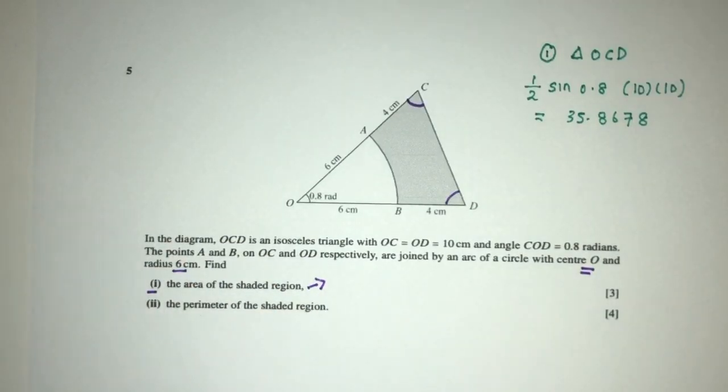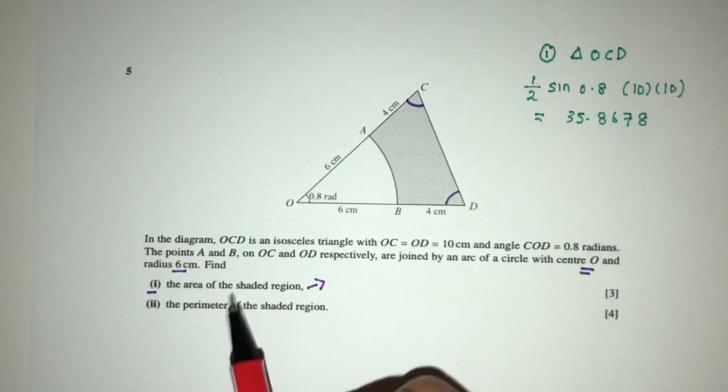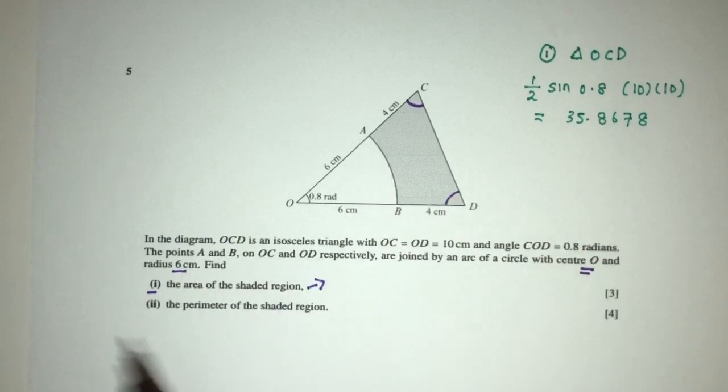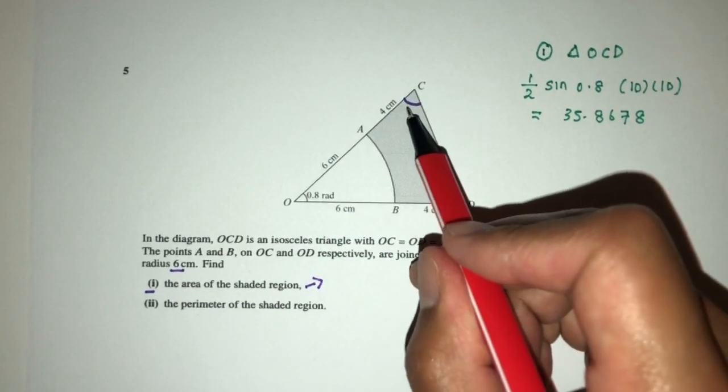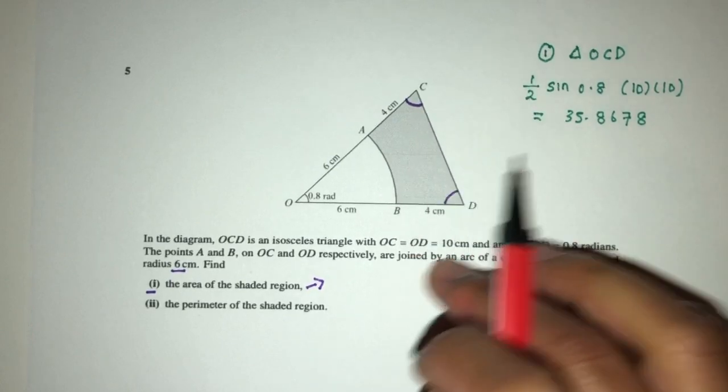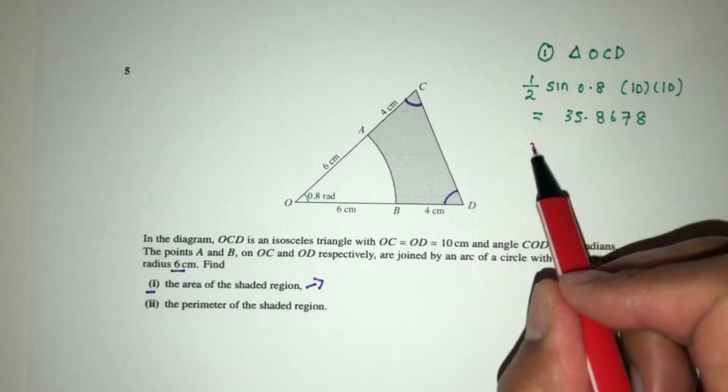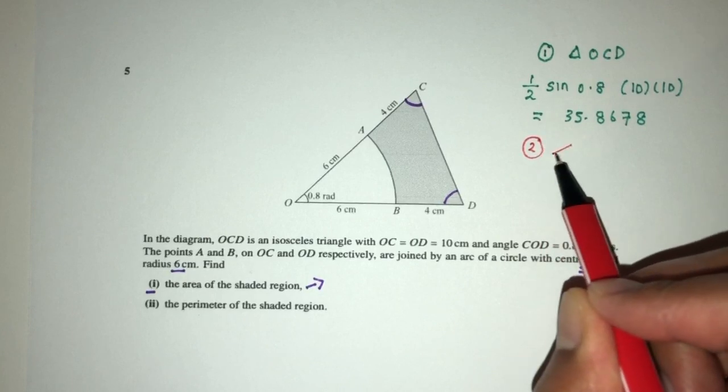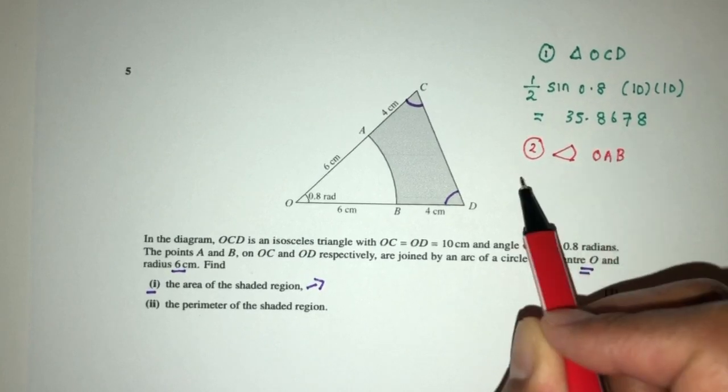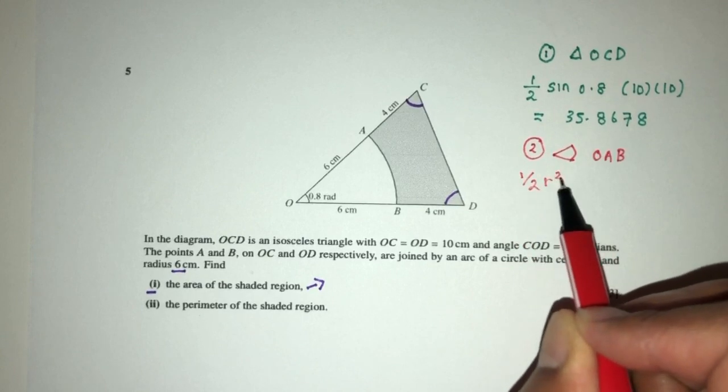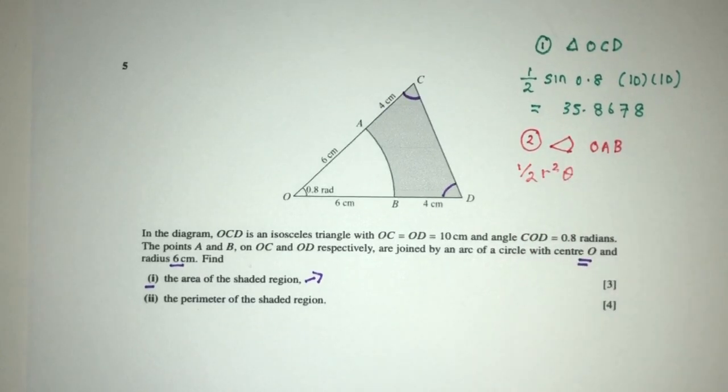Now let's move on to the next part. To find only this shaded part, since we have everything now, we have to minus this one. So number two, we have to minus the sector OAB. Pretty easy again, that will be half R squared theta is the angle. So let's do that.